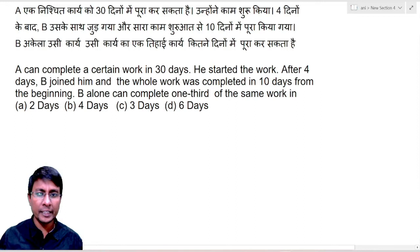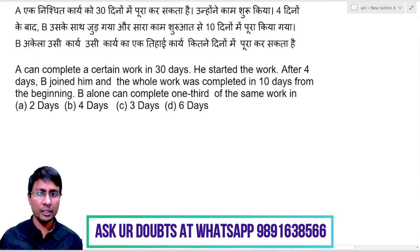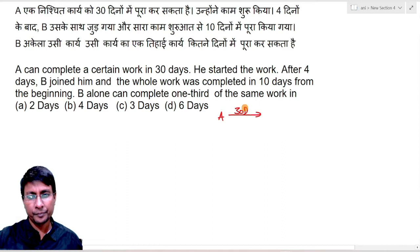A can complete a certain work in 30 days. He started the work. After four days, B joined him and the whole work was completed in 10 days from the beginning. B alone can complete one-third of the same work in how many days?